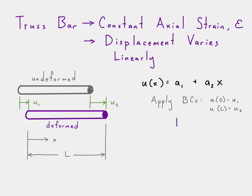We're going to apply our boundary conditions to this equation, which is the fact that we know that displacement at 0 is equal to the displacement at node 1. Displacement at L is equal to u2. And we end up getting the following equation. Fantastic.